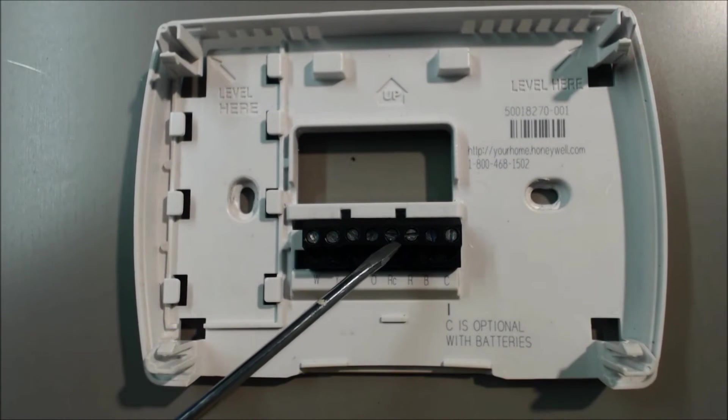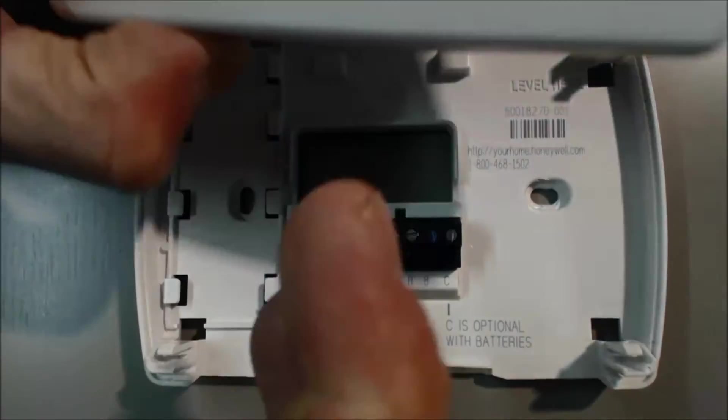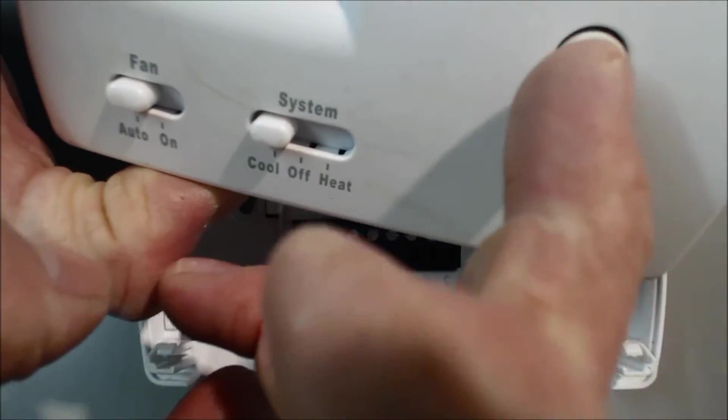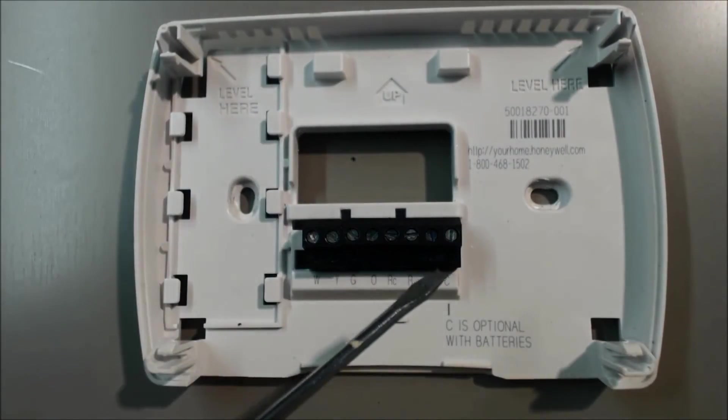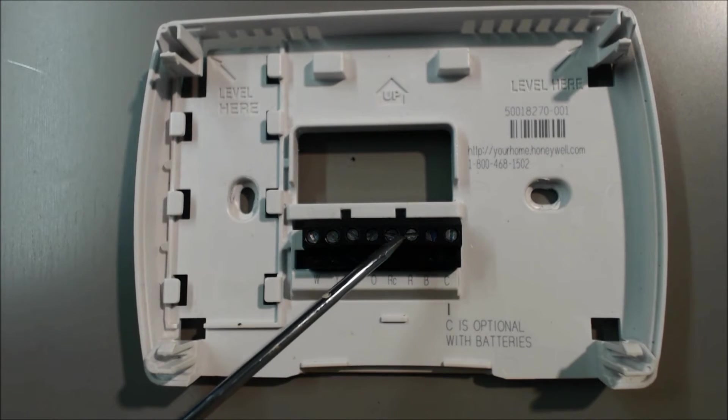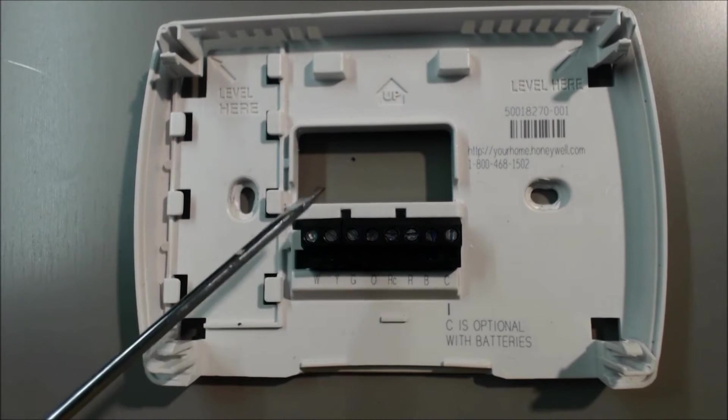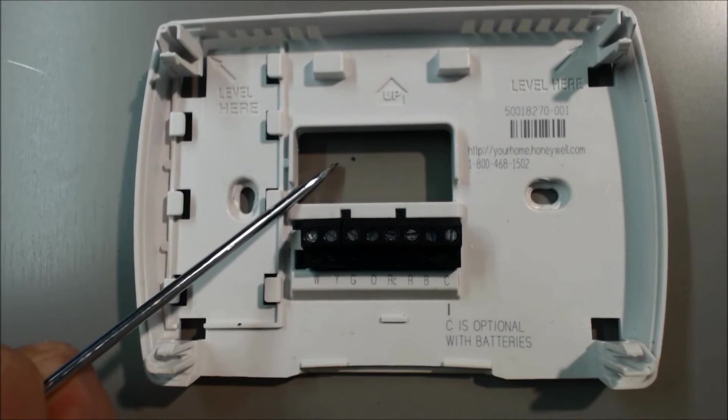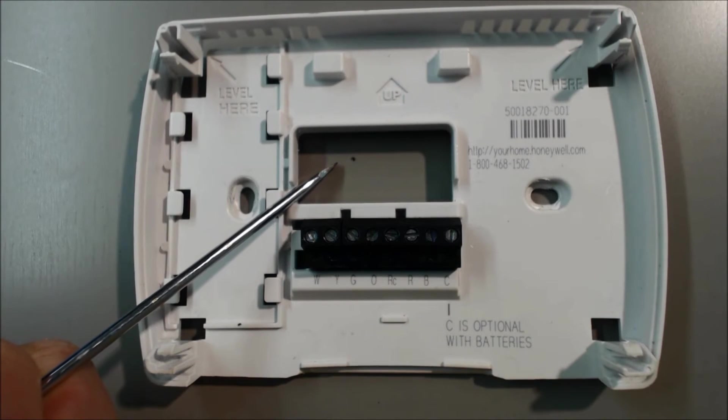With that 24 volts, when you tell cooling to turn on, you're going to tell cooling to turn on by pressing the button down. Then you're going to have the 24 volts get connected in the thermostat and come out the Y terminal back to the control board on the air handler, and it'll tell cooling to turn on.